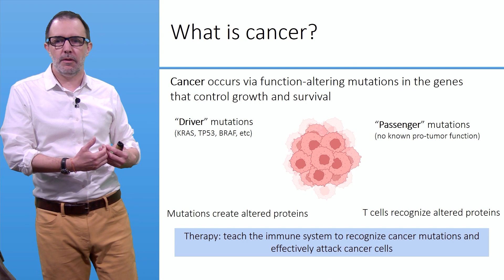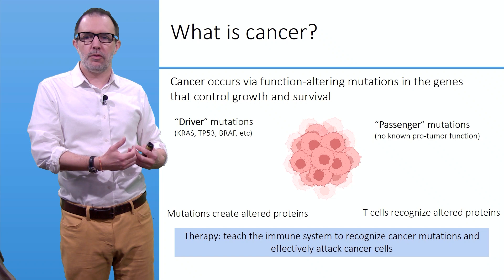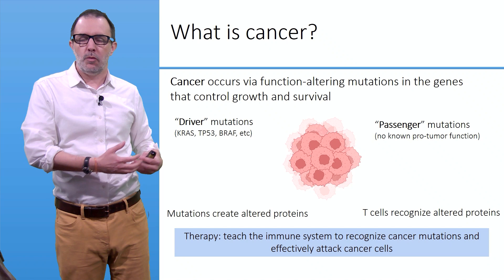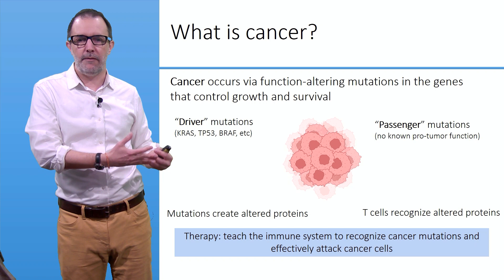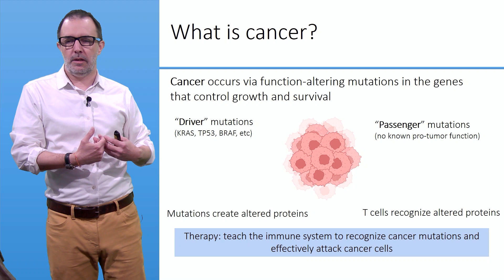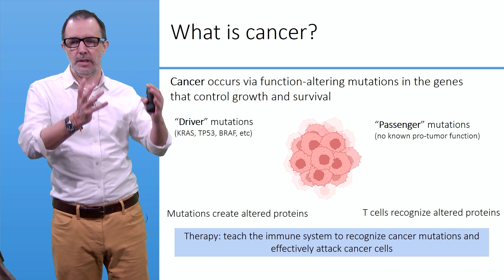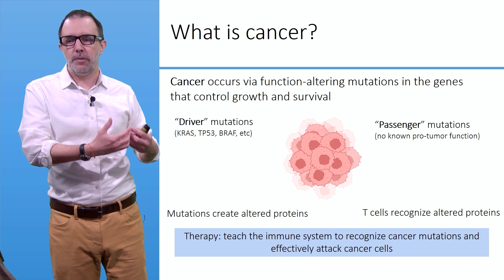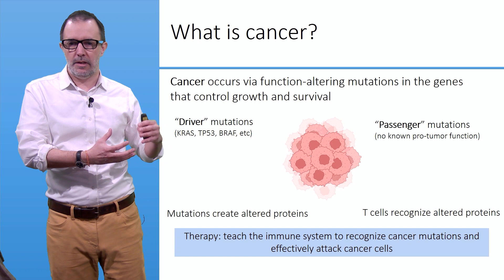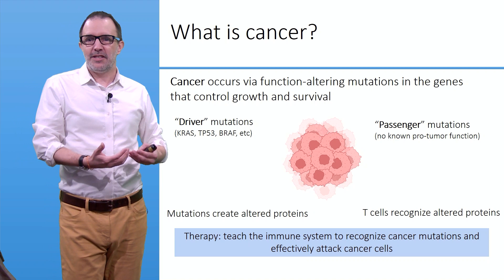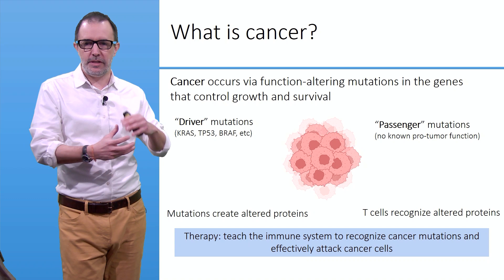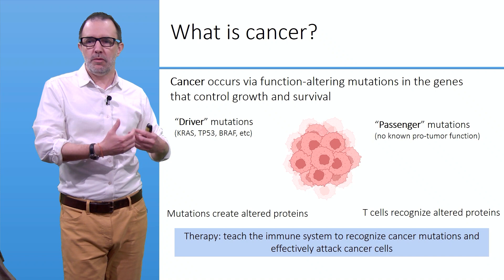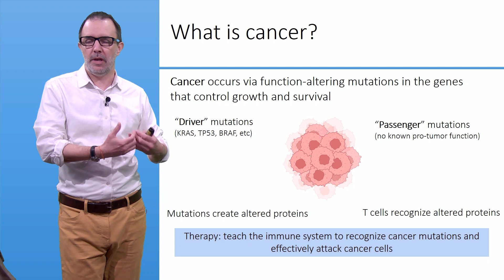This is why the prevalence of cancer augments with age. Cancer occurs when function-altering mutations appear in genes that control growth and survival — these are called driver mutations. We also have passenger mutations, but these ones have no known pro-tumor functions. These mutations result in the creation of altered proteins, and our immune system will recognize these altered proteins as specific to the cancer cells, triggering an immune reaction to identify and kill those cancer cells.